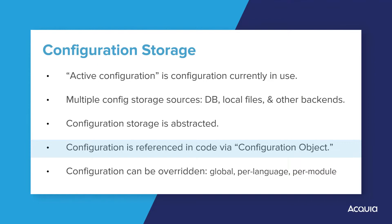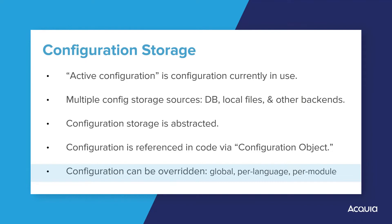Within a configuration object, configuration settings themselves have data types, such as integer, string, boolean, etc. These settings can also exist in a nested hierarchy known as a mapping. Note that for maximum flexibility, Drupal configuration can also be overridden on a global per-site, per-language, or per-module basis.